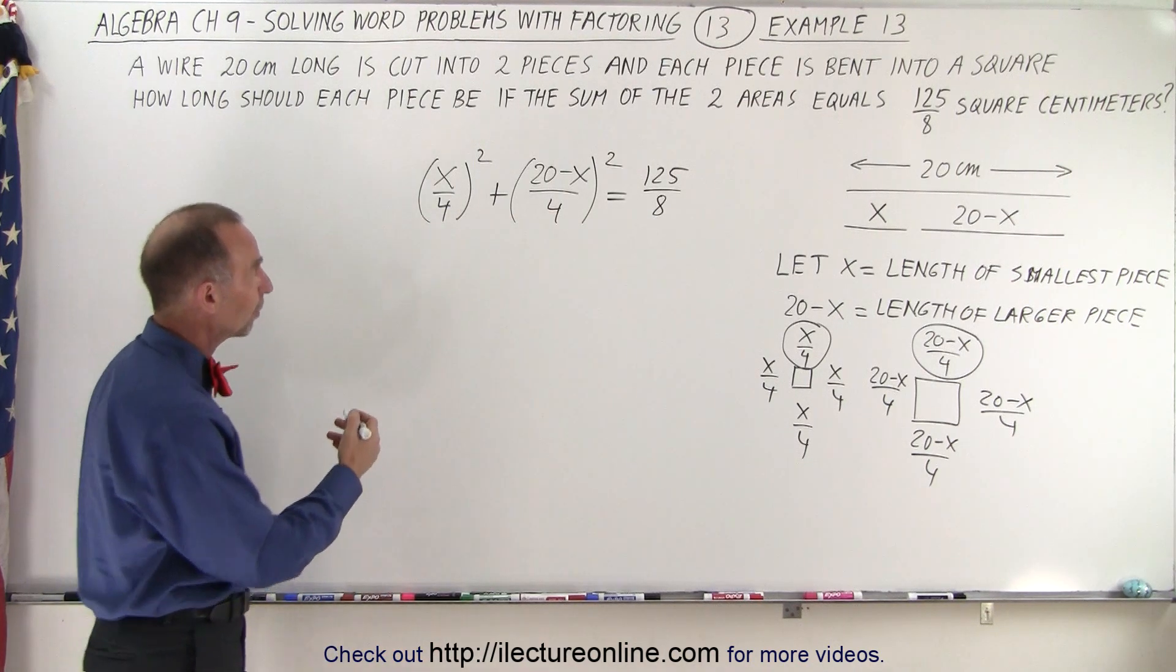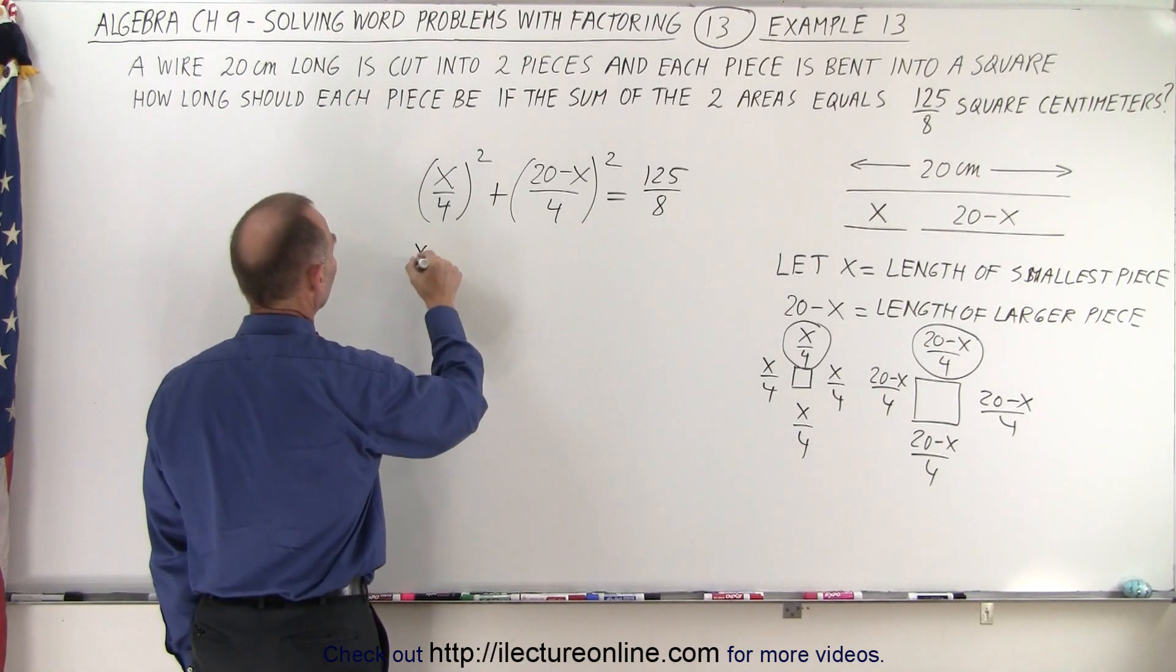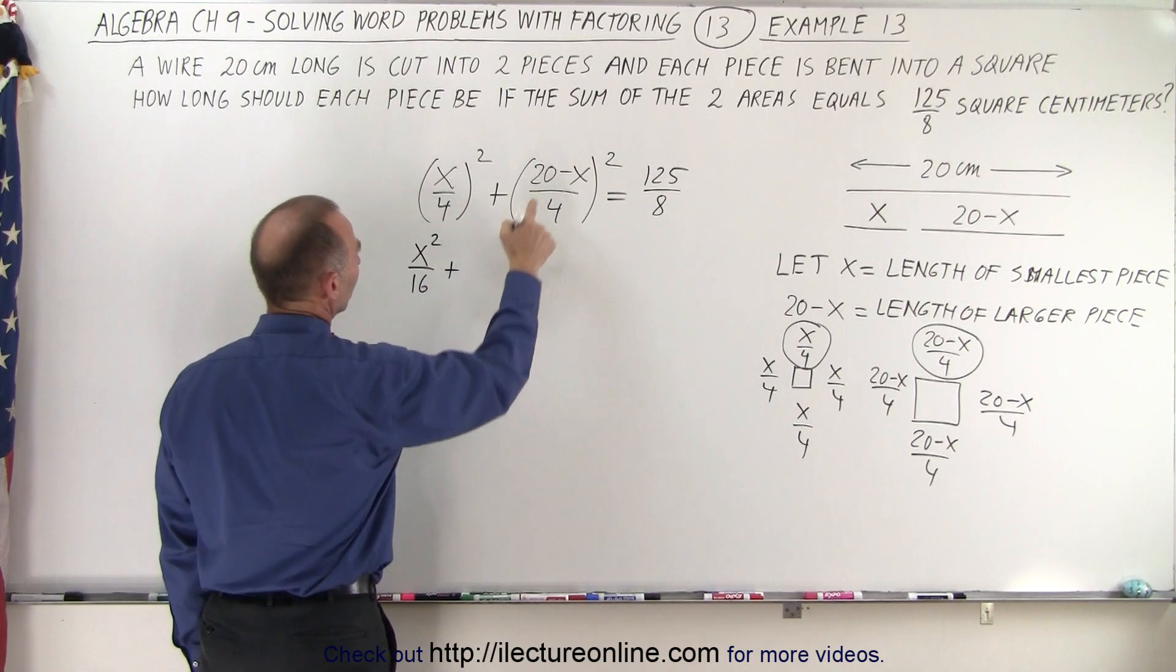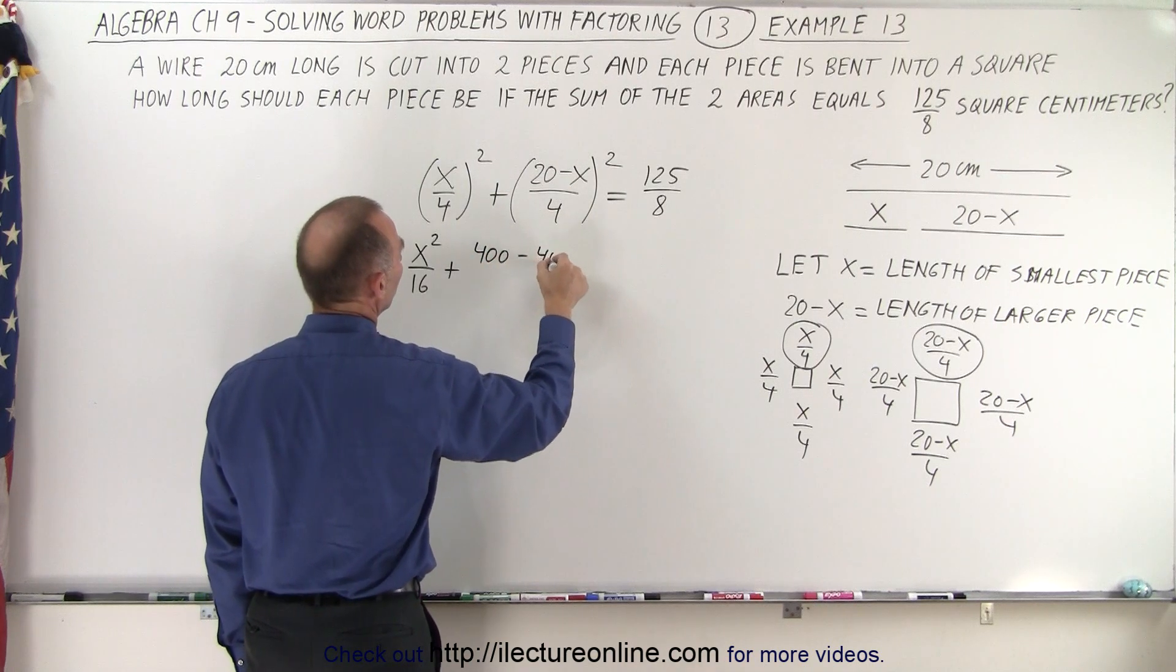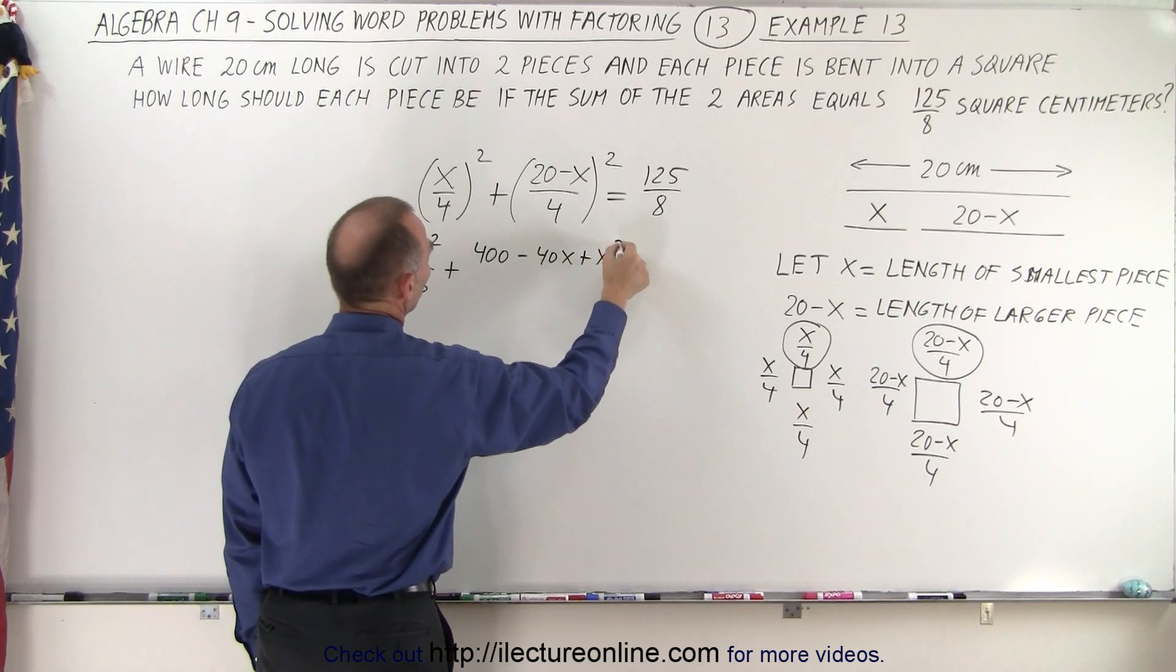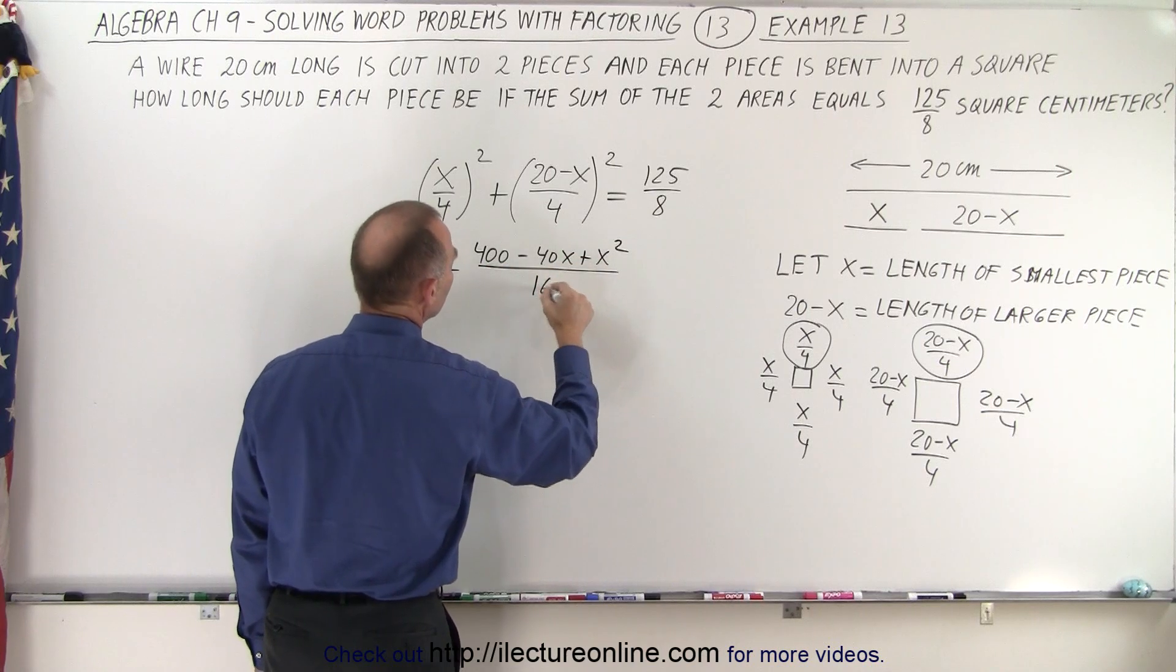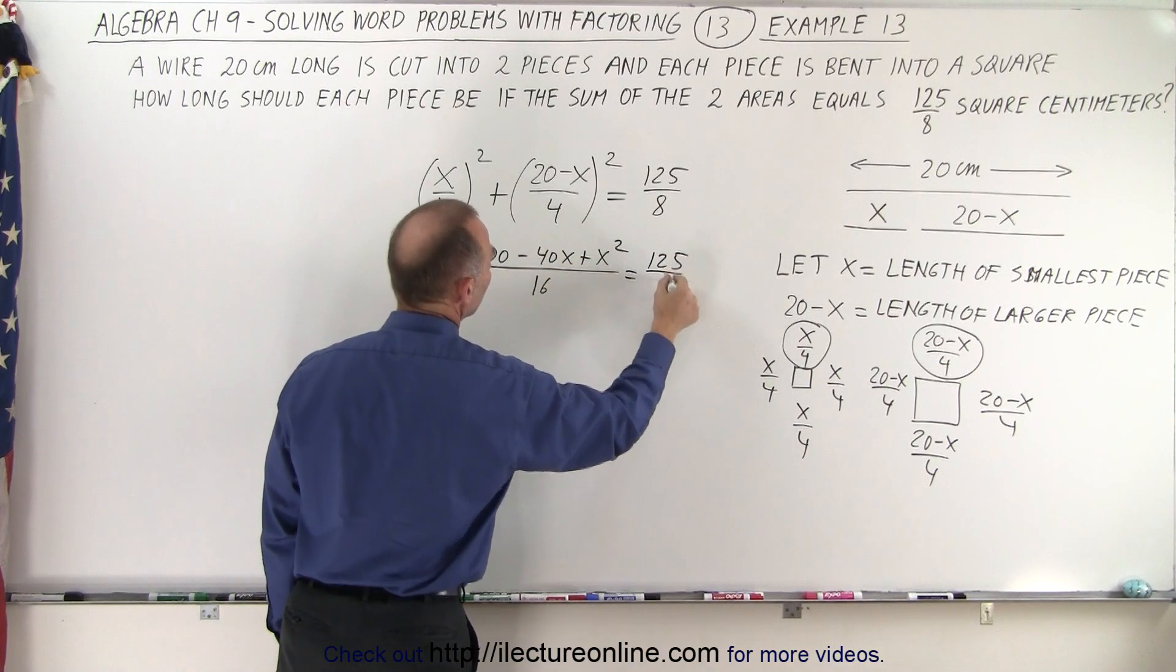So first let's multiply everything out. We have x squared divided by 16 plus, we multiply this out, we get 400 minus 40x plus x squared divided by 16 equals 125 divided by 8.